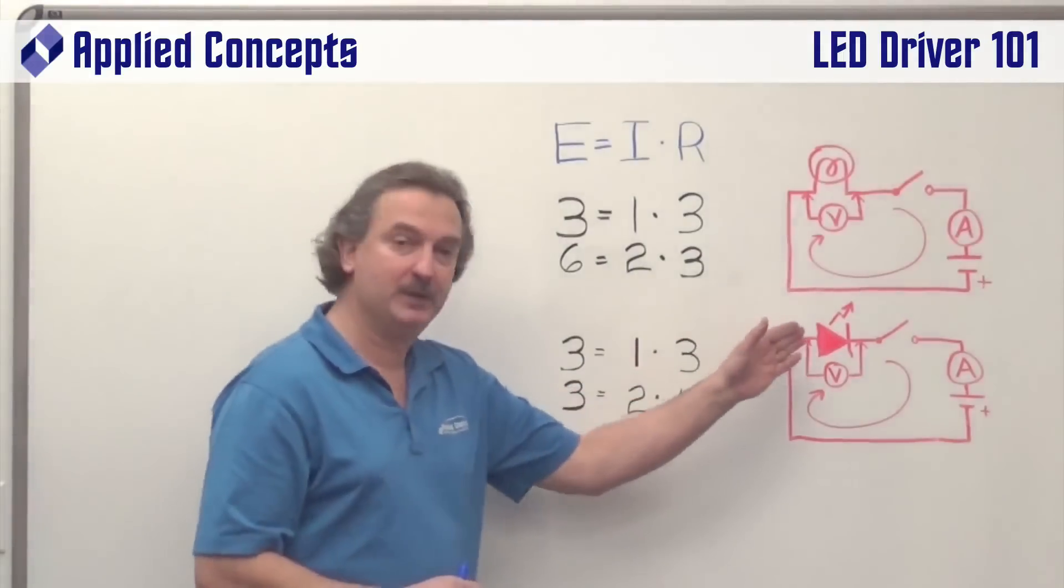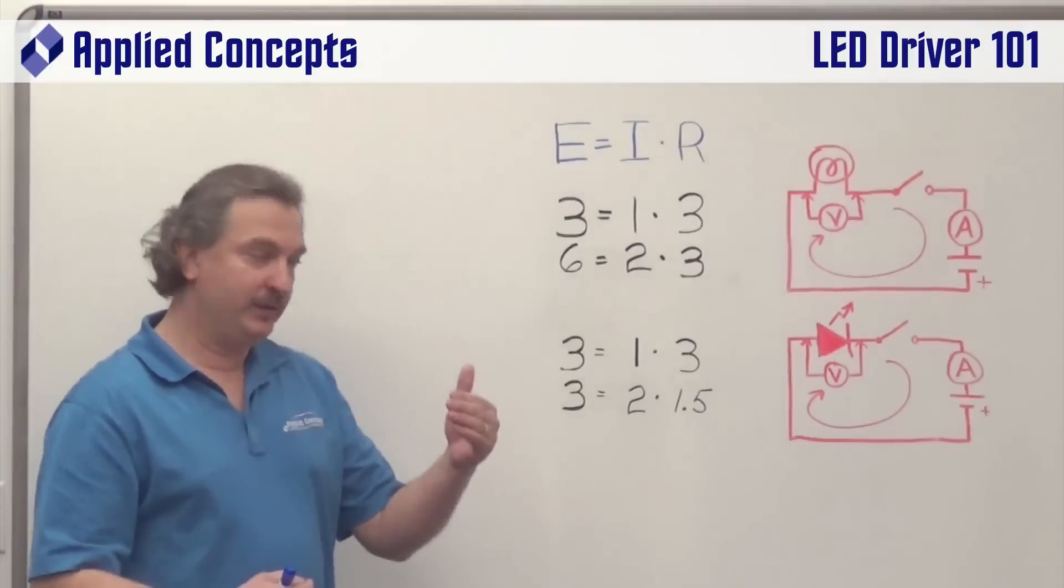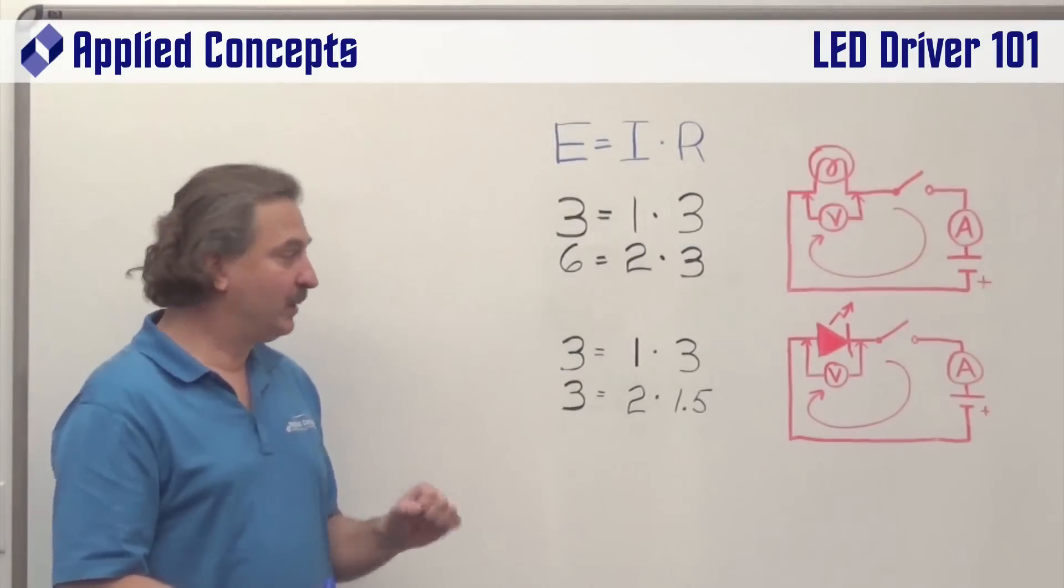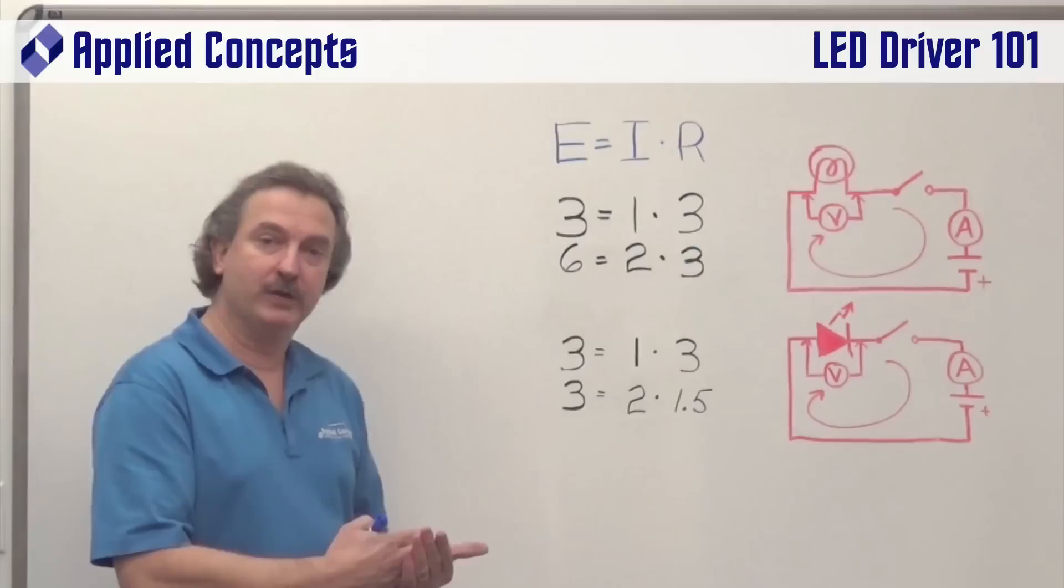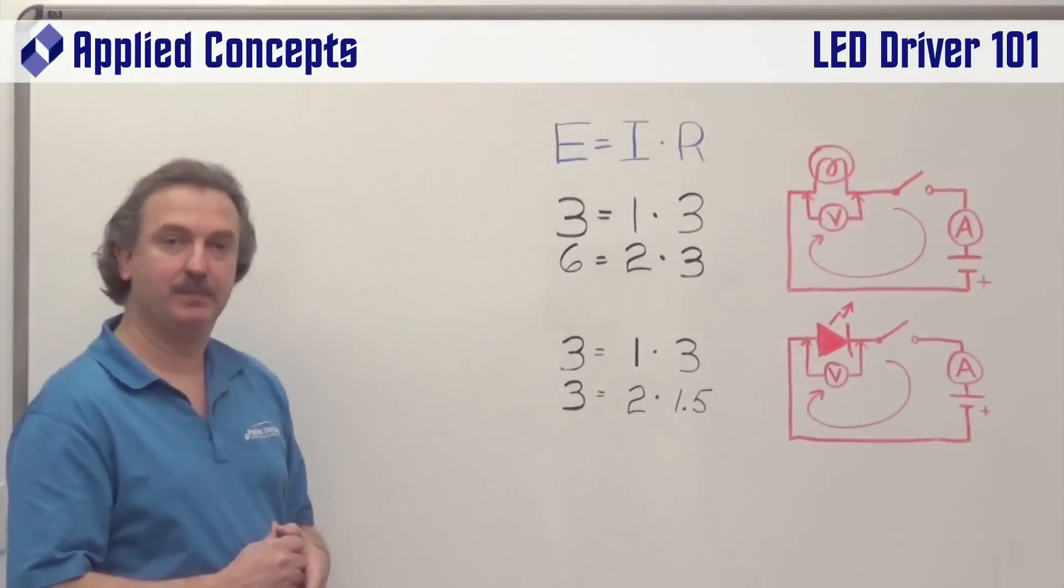Well, what we have is a variable impedance load, one that is a negative coefficient. The higher the current, the lower the impedance. This is exactly why we need an LED driver, something that will regulate on current, rather than regulate on the fixed voltages in the case of an incandescent light bulb.